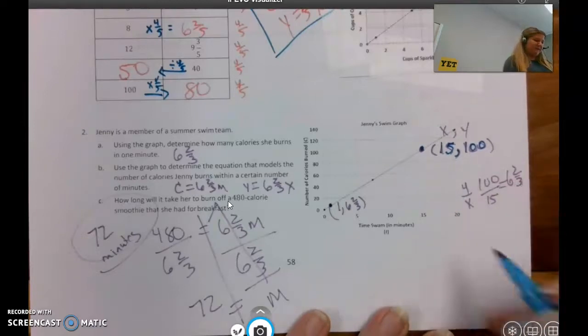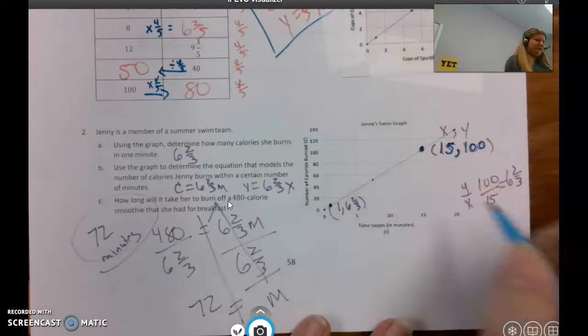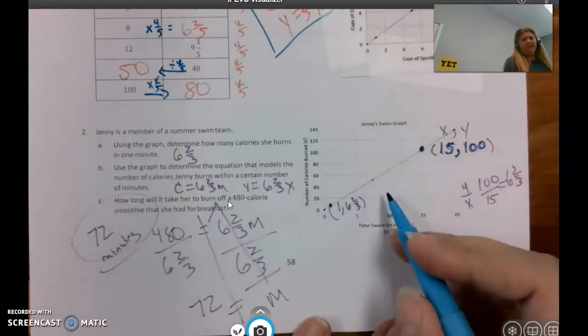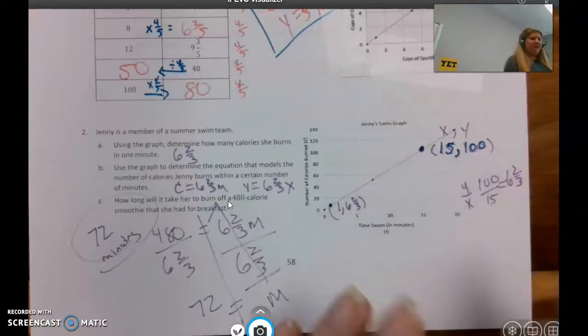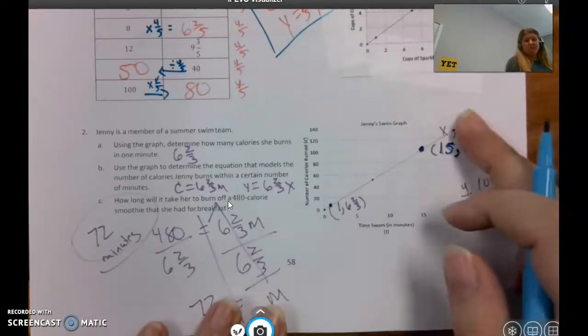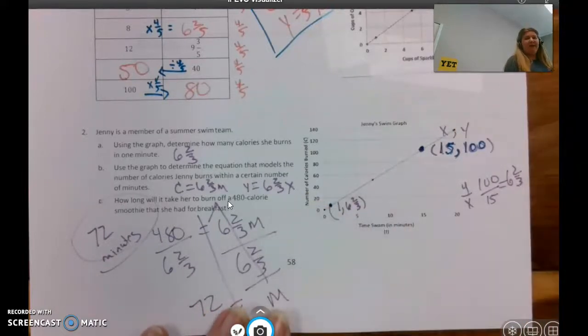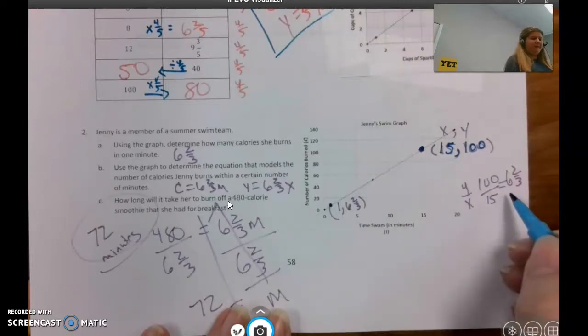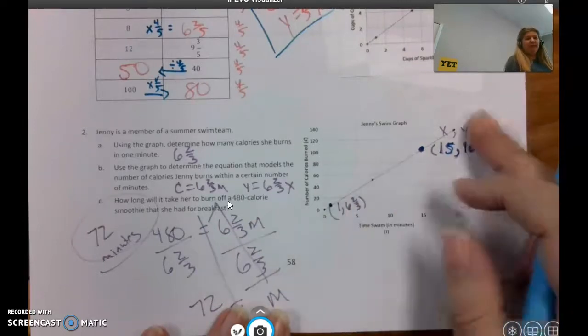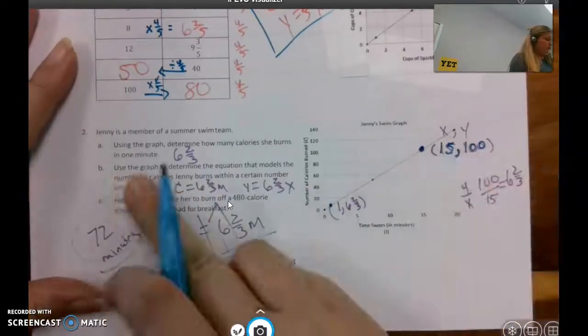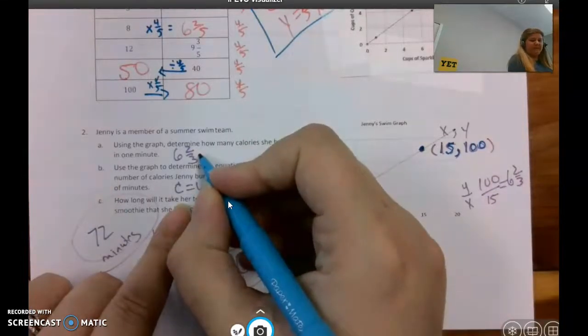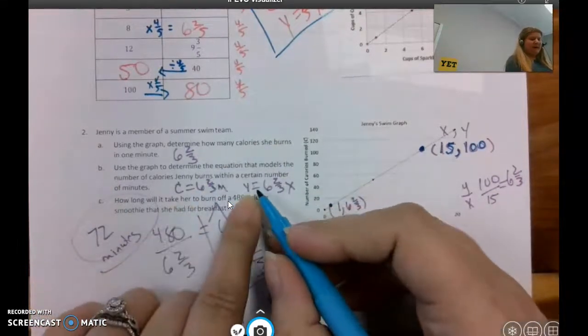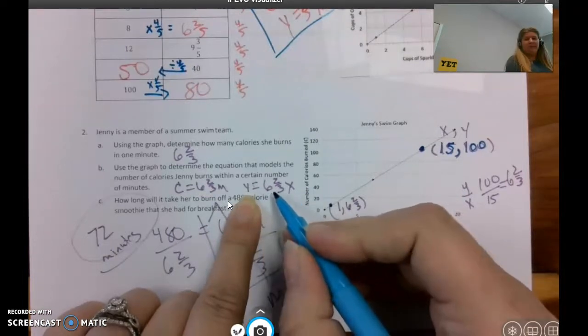So this point is 15, 100, that's x and y, so then I did y divided by x and got 6 and 2/3. This one, it would really be difficult to do that precisely as well, so this was basically the only point I could precisely read and use. But as long as I know it's proportional because it's a straight line through the origin and I go back and do y divided by x, I can find the unit rate using any point on a proportional graph. Okay, so then we're supposed to use the graph to determine the equation.